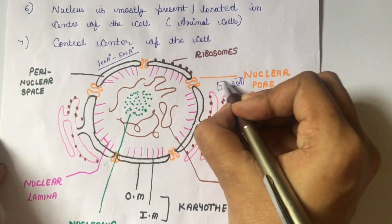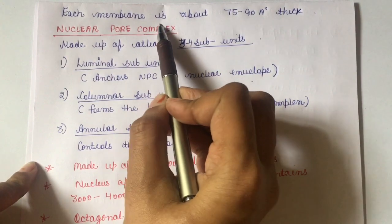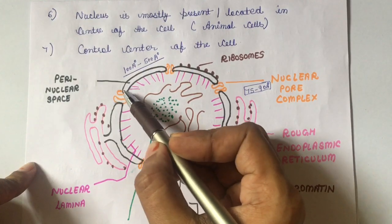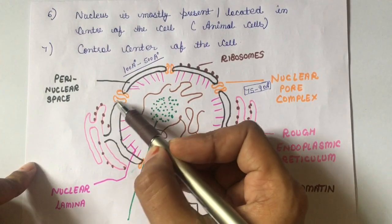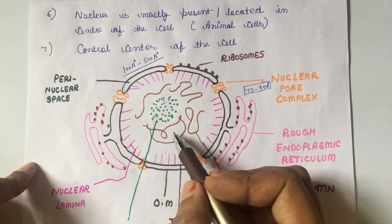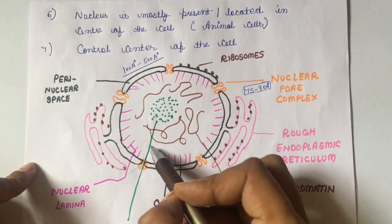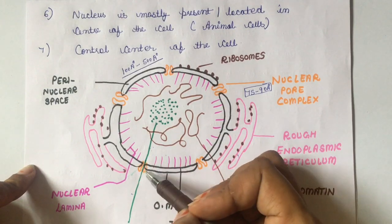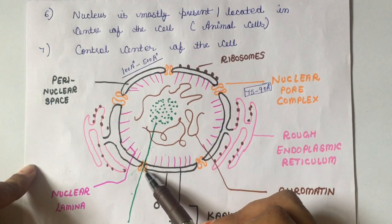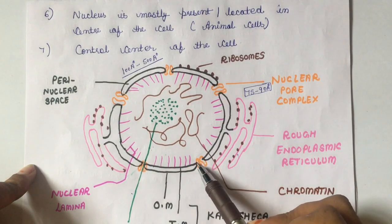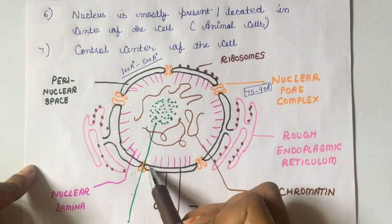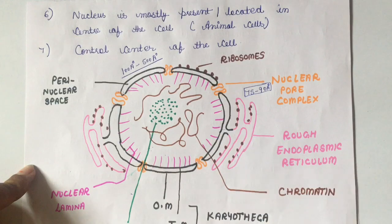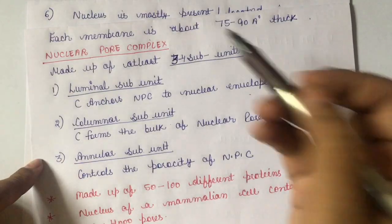Nuclear pores are small channels spanning the nuclear envelope that control the entry and exit of substances inside the nucleus — they regulate what should come in and what should go out. This movement of material is controlled by nuclear pores, and more precisely by the nuclear pore complex. Each pore is lined by a set of proteins called the nuclear pore complex, which is made up of various proteins and subunits.